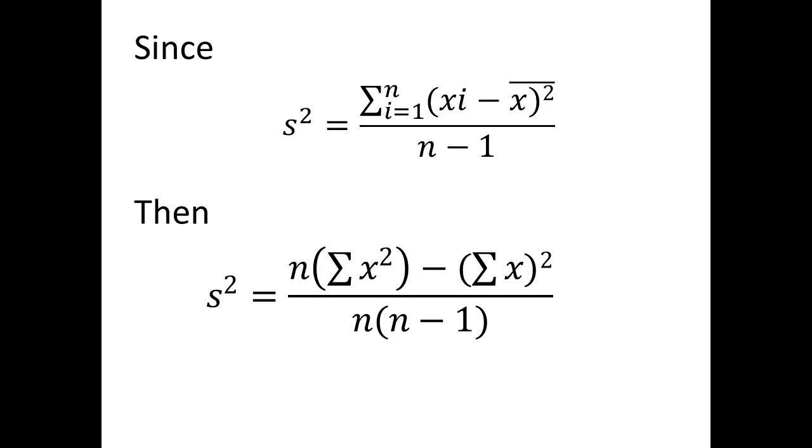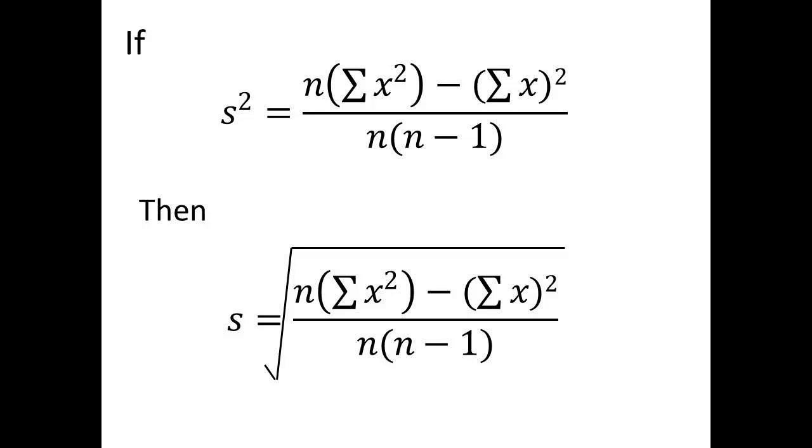Since S², the variance, equals Σ(Xi - X̄)² divided by N minus 1, then we can rewrite this as S² equals N·ΣX² minus (ΣX)², divided by N(N - 1). That means that we can also rewrite S as equal to the square root of N·ΣX² minus (ΣX)², divided by N(N - 1).